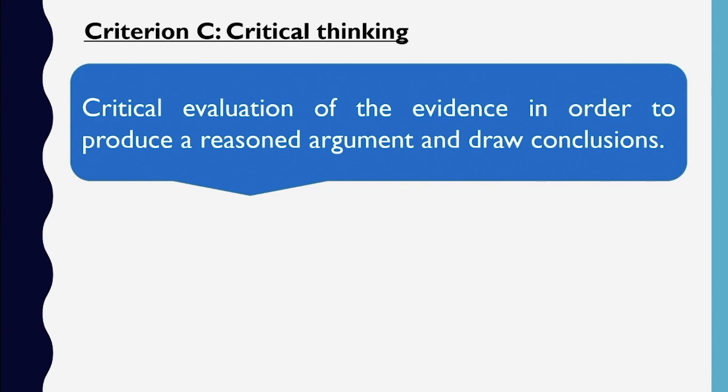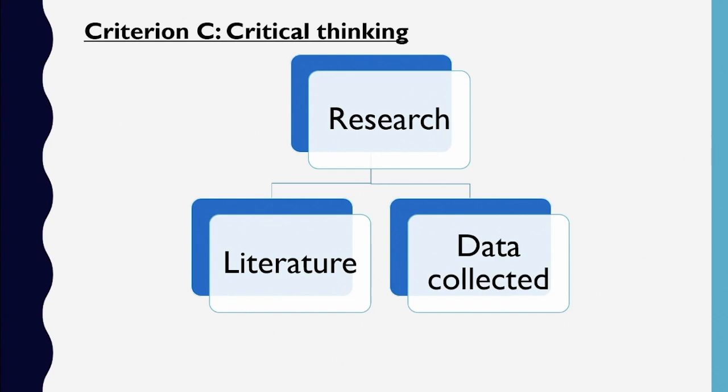Criterion C assesses the extent to which critical thinking skills have been used to analyze and evaluate the research undertaken by the students, and it presents the criterion that has the most allocated marks. The term research refers to the literature sources, the primary and secondary sources, and the data gathered or collected by the students in the chemistry lab.